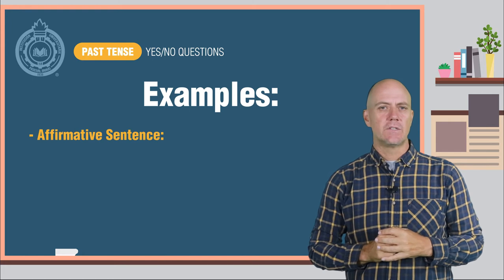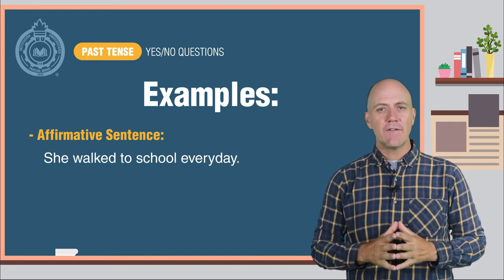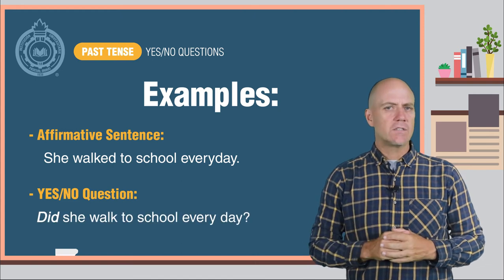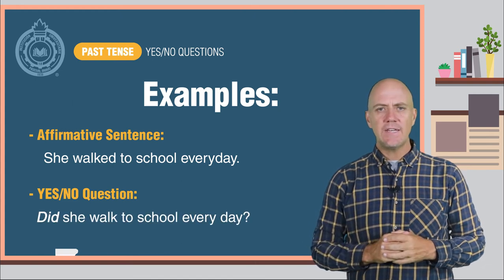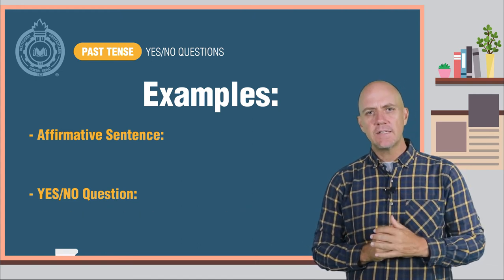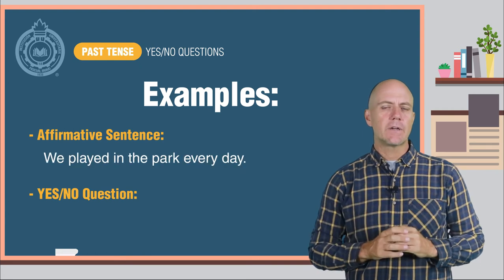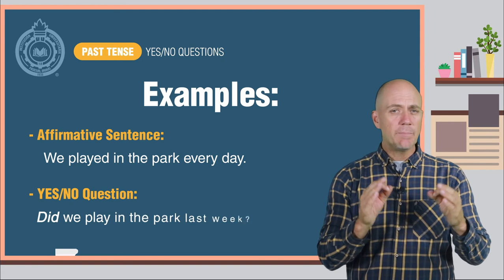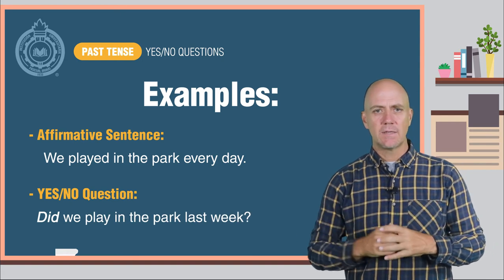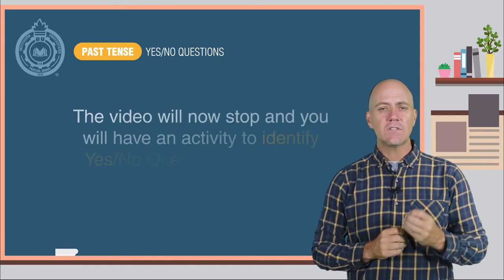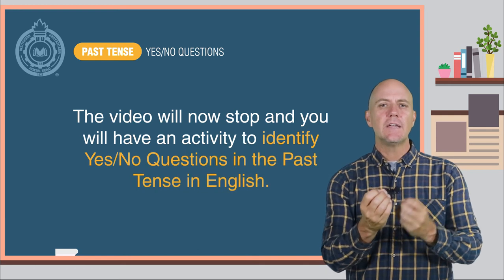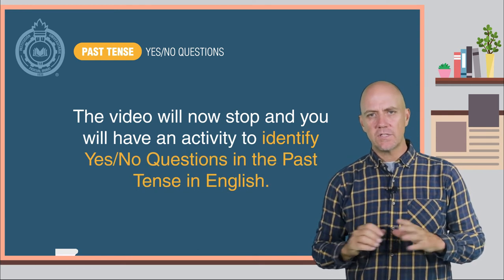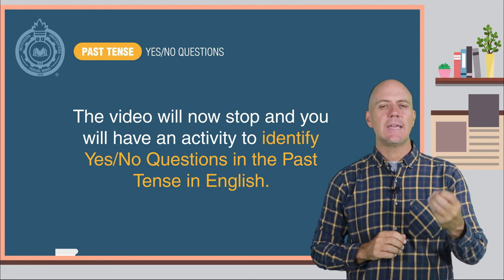Let's look at some examples. Affirmative sentence: She walked to school every day. Yes-no question: Did she walk to school every day? Affirmative sentence: We played in the park every day. Yes-no question: Did we play in the park last week? The video will now stop and you will have an activity to identify yes-no questions in the past tense in English.